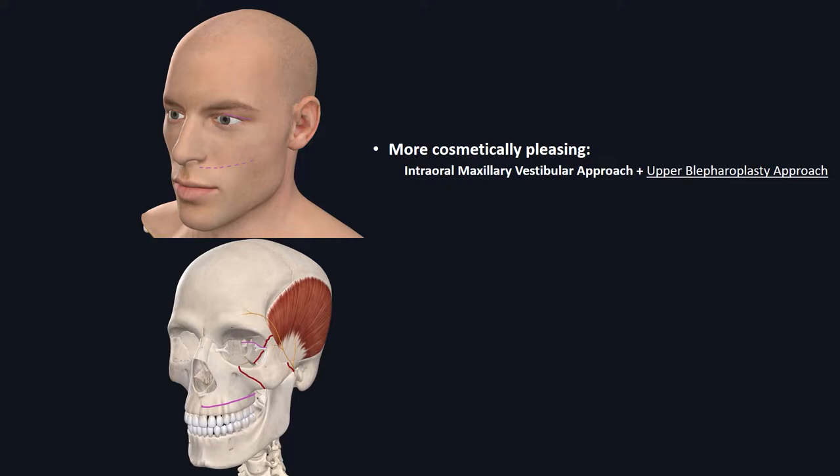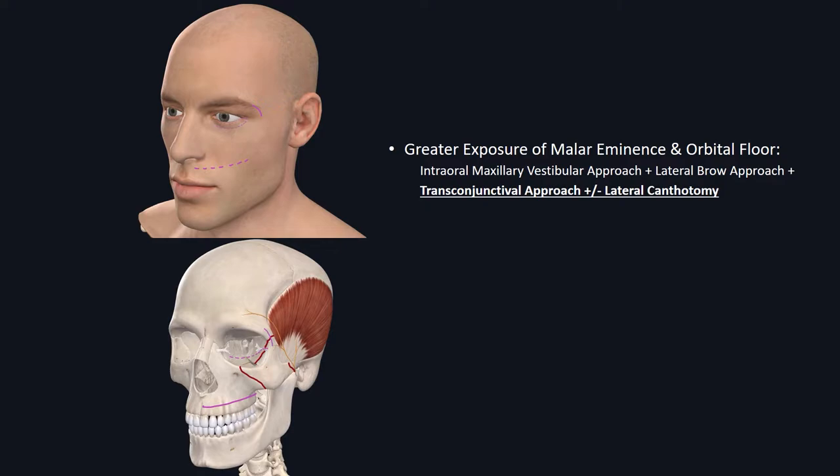In cases with more severity involving the malar eminence and orbital floor component, you want to combine the intraoral maxillary vestibular approach with the lateral brow approach, and combine that with a transconjunctival approach with or without lateral canthotomy.